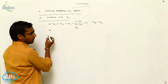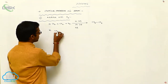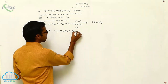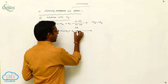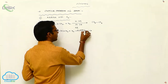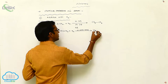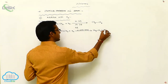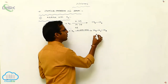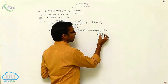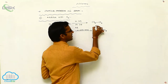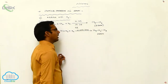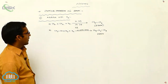Next, if we consider propene: CH₃-CH=CH₂, addition with H₂ in presence of nickel, platinum, or palladium gives CH₃-CH₂-CH₃. The propene is converted to propane. Similarly, ethylene is converted to ethane by addition of hydrogen in presence of nickel, platinum, or palladium catalysts.